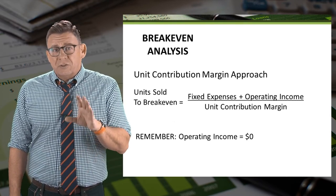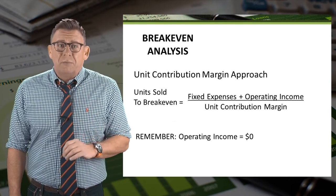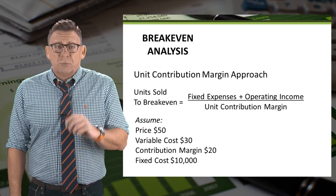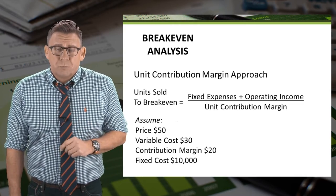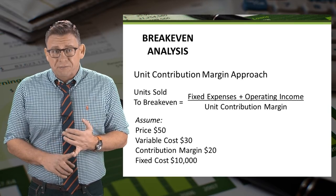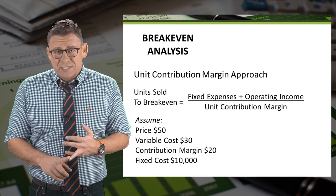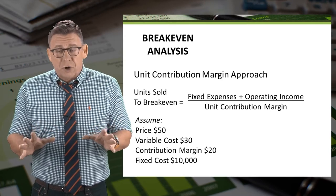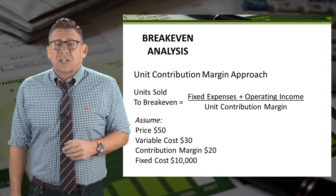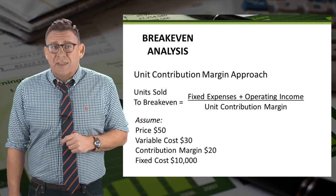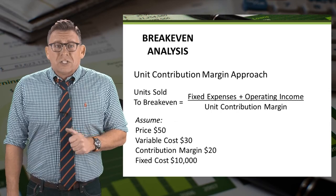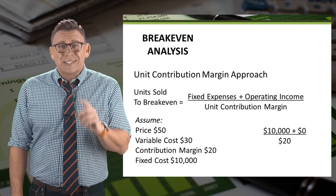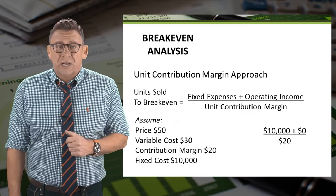Remember that to break even means operating income is zero. So let's assume the following: price is $50, variable cost is $30, therefore our contribution margin is $20, and fixed costs are $10,000. So the calculation is $10,000 plus zero, divided by $20.